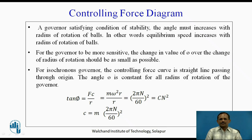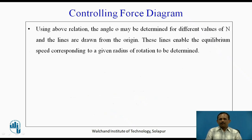The angle φ is constant for all radius of rotation. So tan φ = Fc/r = mrω²/r = (2πn/60)² = c × n², where c = m × (2πn/60)² is a constant. Using this relation, the angle φ may be determined for different values of n and lines are drawn from the origin. These lines enable the equilibrium speed corresponding to a given radius of rotation to be determined.